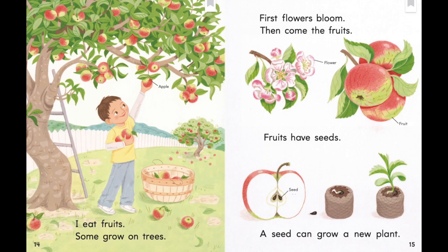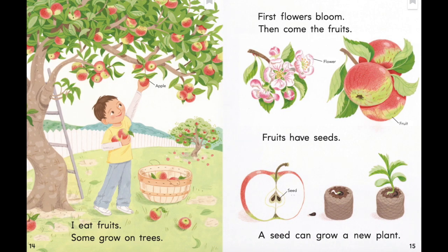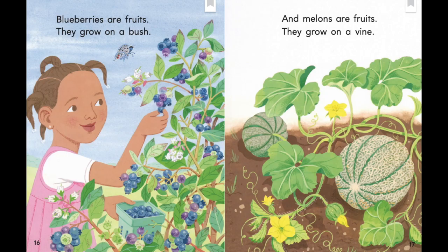I eat fruits. Some grow on trees. First, flowers bloom, then come the fruits. Fruits have seeds — a seed can grow a new plant. Does the flower bloom before or after the fruit comes? You're right, the flower blooms first, then the fruit comes. Blueberries are fruits; they grow on a bush.